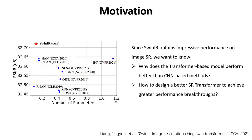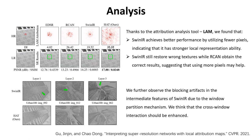Before introducing the method, we first present the motivation of this work. Since SwinIR obtains impressive performance on Image SR, we want to know the answers of two questions: why does the transformer-based model perform better than CNN-based methods, and how to design a better SR transformer to achieve greater performance breakthroughs? Thanks to the attribution analysis tool, we can obtain two insightful observations.